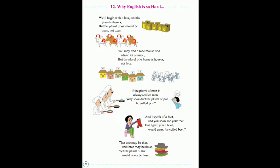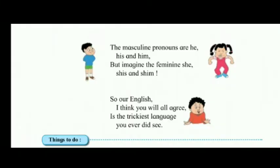would a pair be called a beat? That one may be 'that' and three may be 'those', yet the plural of hat would never be hose. The masculine pronouns are he, his and him. But imagine the feminine: she, she's and shim. So our English, I think you will all agree, is the trickiest language you ever did see.